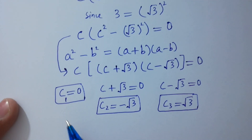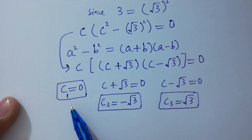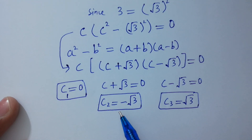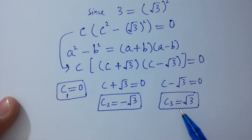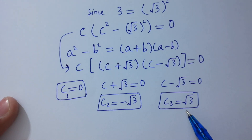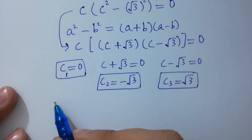Since the equation has power 3, it has three solutions. First solution: c1 is equal to 0. Second solution: c2 is equal to minus square root of 3. Third solution: c3 is equal to square root of 3.